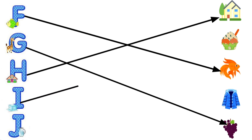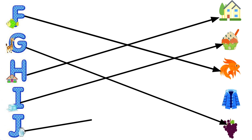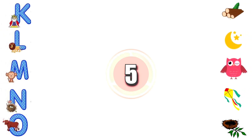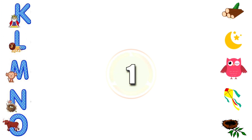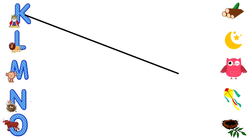I for Ice Cream, J for Jacket, K for Kite.